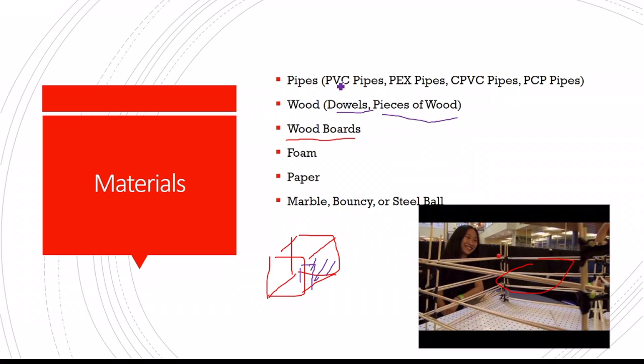You can use PVC pipes, PEX pipes, CPVC pipes, PCP pipes. They all belong to pipes. And you can use that as track, or you can use dowels like they did down here. Or you can use paper to make tracks, or you can use foam to make tracks. There's a lot of ways.